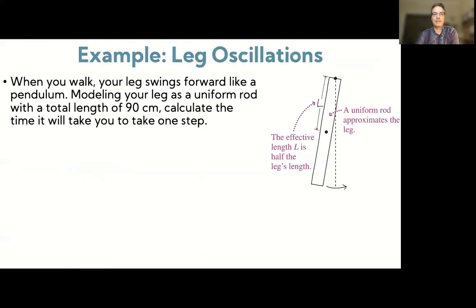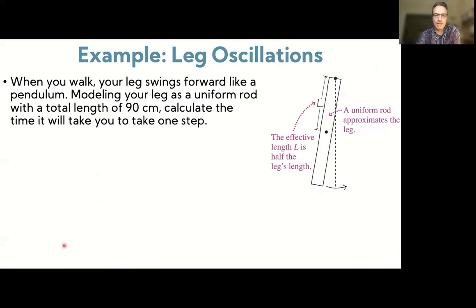Here is an example applying what we learned about physical pendula to leg oscillation. We model a leg as a physical pendulum: when you walk, your leg swings forward like a pendulum. If you model your leg as a uniform rod with a total length of 90 centimeters, rotating around the hip pivot point, calculate the time it takes to take one step. Try that first, and solutions will be posted in a separate video.